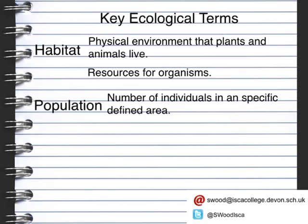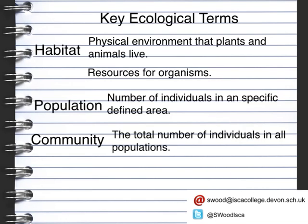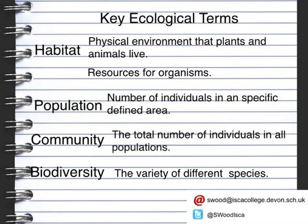The next key term is a community. A community is the total number of individuals within a population and all the populations together. It could be all the organisms that live in a particular wood — so you're counting the trees, the foxes, the badgers, everything that is in that specific habitat. The next key term is biodiversity. The word 'bio' means it's to do with any living organisms, and 'diversity' means a variety. So biodiversity means the variety of different species in a particular habitat.